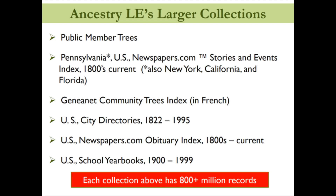This slide outlines some of the larger collections found on Ancestry Library Edition. For example, this database currently includes just short of 1.9 billion searchable public member trees, nearly 1.4 billion U.S. city directories ranging from 1822 to 1995, and well over 850 million school yearbooks. Note that some of Ancestry Library Edition's international records are written in the language of that country, such as birth and baptismal records and the Gnet tree index.